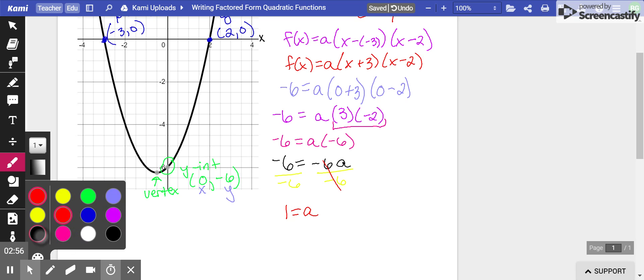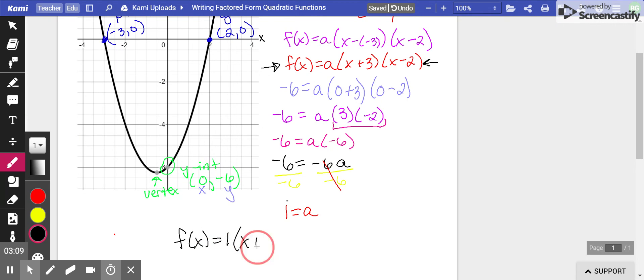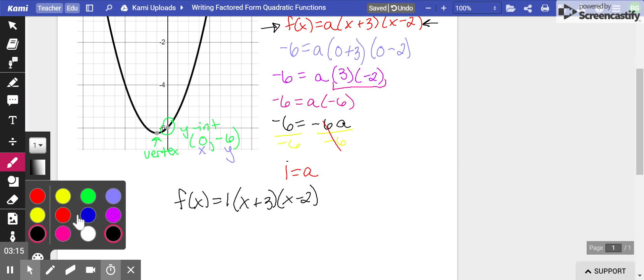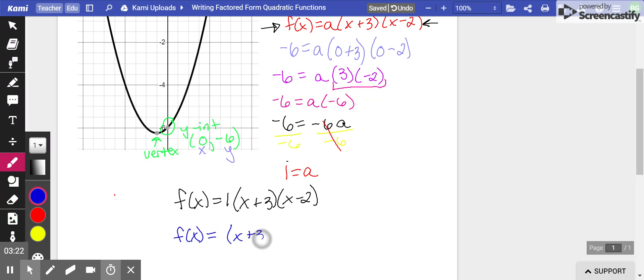So then to write our final formula, we go back up to this point and substitute the a value we just found. So it's going to be f of x equals 1 times x plus 3 times x minus 2. Typically we don't write that 1 in front. It's an implied one. So this would simplify to f of x equals x plus 3 times x minus 2. That is the factor form.